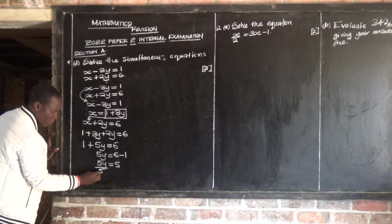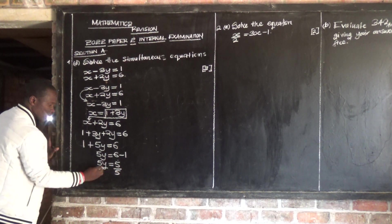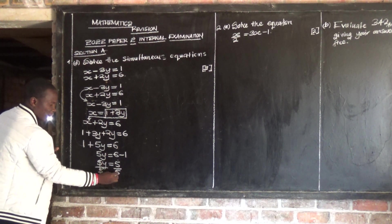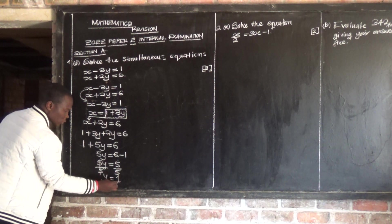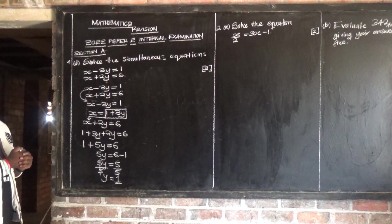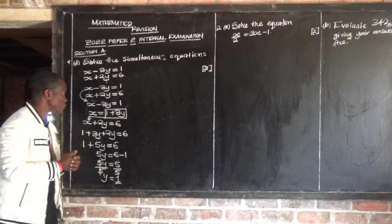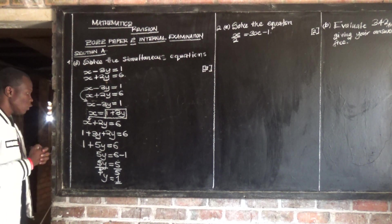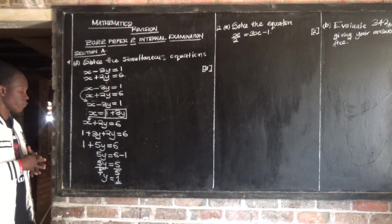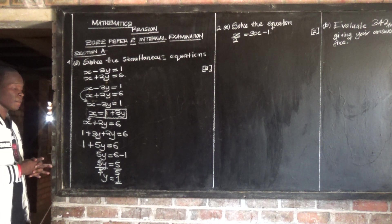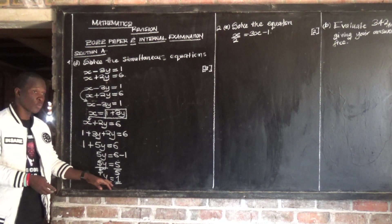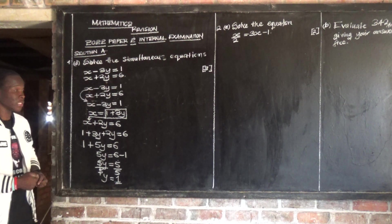So 5 over 5 — these two cancel — and y is equal to 5 over 5, which is positive 1. So the value of y is positive 1. Now, having known the value of y, we need to find the value of x by substituting y equals positive 1 into any of the two equations.